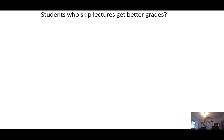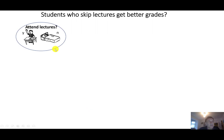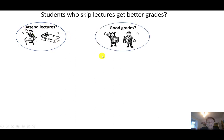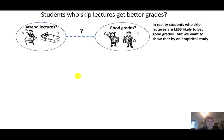For simplicity, let's assume that students either attend regularly or mainly skip lectures, so every student is classified as fitting into one of these two categories. They either attend lectures or they don't attend lectures. Similarly, let's assume they either get good grades or they don't get good grades. In reality, we know that students who skip lectures are less likely to get good grades, but we want to show this empirically.